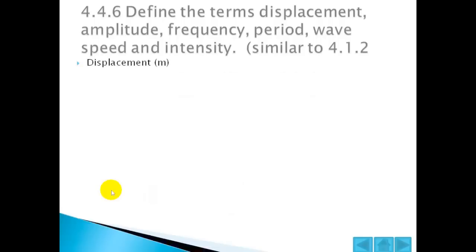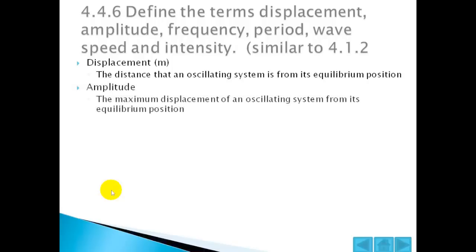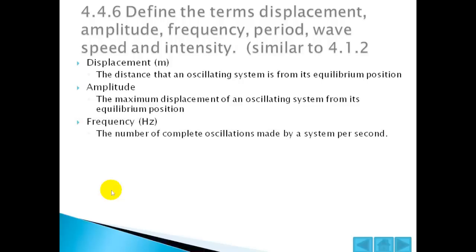Displacement is the distance that an oscillating system is from its equilibrium position. The amplitude is the maximum displacement of an oscillating system from its equilibrium position. Frequency is the number of complete oscillations made by a system per second, or it can be the number of oscillations made per second by a wave source.